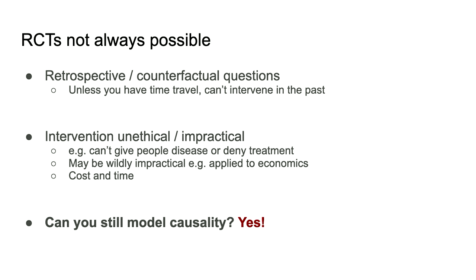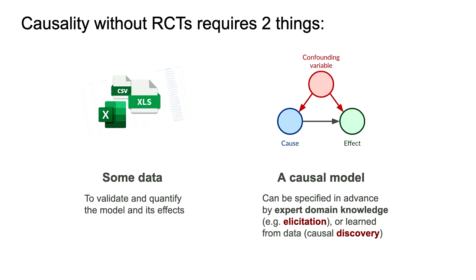The answer is yes. You basically need two things: first, you need some data, and secondly, you need a causal model. There are many types of causal model, but most commonly you produce the model either by drawing on the knowledge of experts — and that process of gathering and teasing out that knowledge is called elicitation — or you can learn the causal model from the data, and that's called causal discovery. So causal inference is the process of using the model once you've got it, discovery is the process of learning a model from data, and elicitation is learning a model from experts. You can also mix these — you can get expert domain knowledge and use that to restrict the range of models for causal discovery.